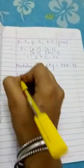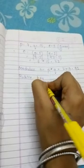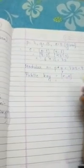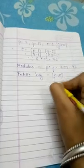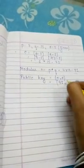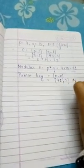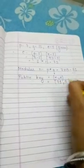So the public key formula is N comma E, and from here we will get N equals 91. So we will write 91, and E equals 5 given. So the public key answer is (91, 5), and here we have got our public key.